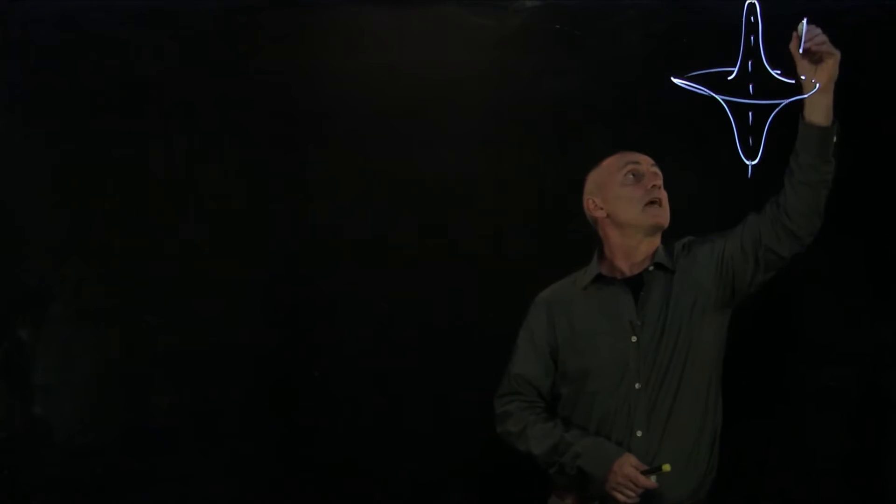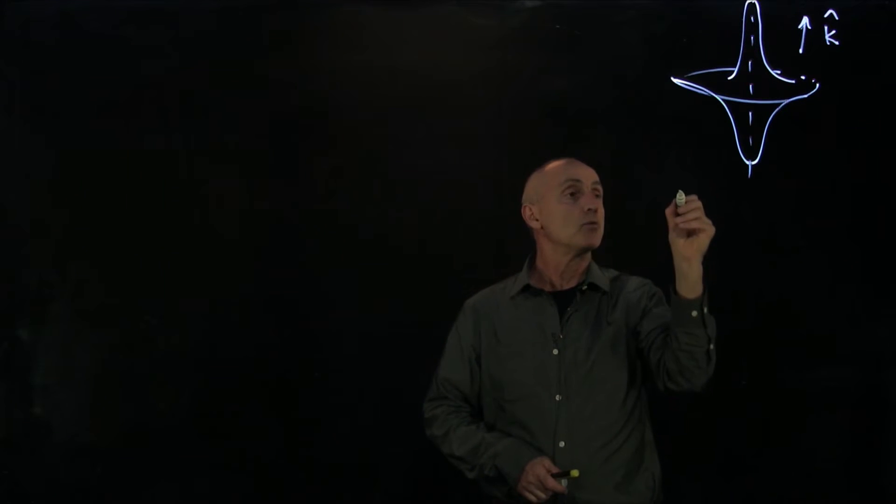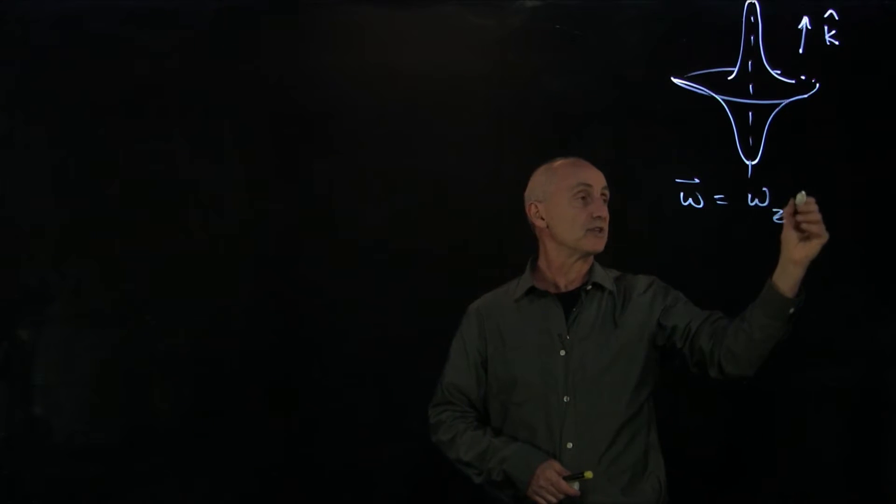And it's rotating about this symmetry axis, k. And we know that the angular velocity of the object, we can write as omega_z k hat.